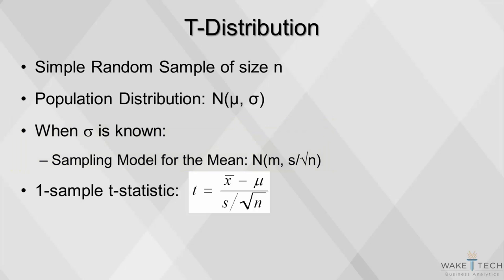When the standard deviation is estimated from the sample standard deviation s, the sampling model follows a t-distribution with degrees of freedom n minus 1. This is the one-sample t-statistic.